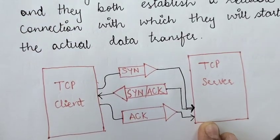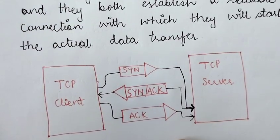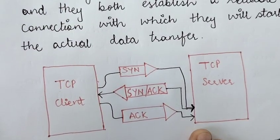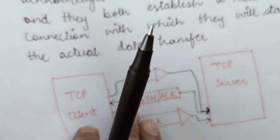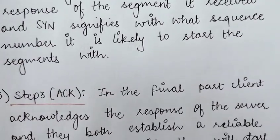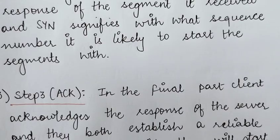Once the connection has been established, both sides can start exchanging messages. This is how a connection is established using the TCP three-way handshake.